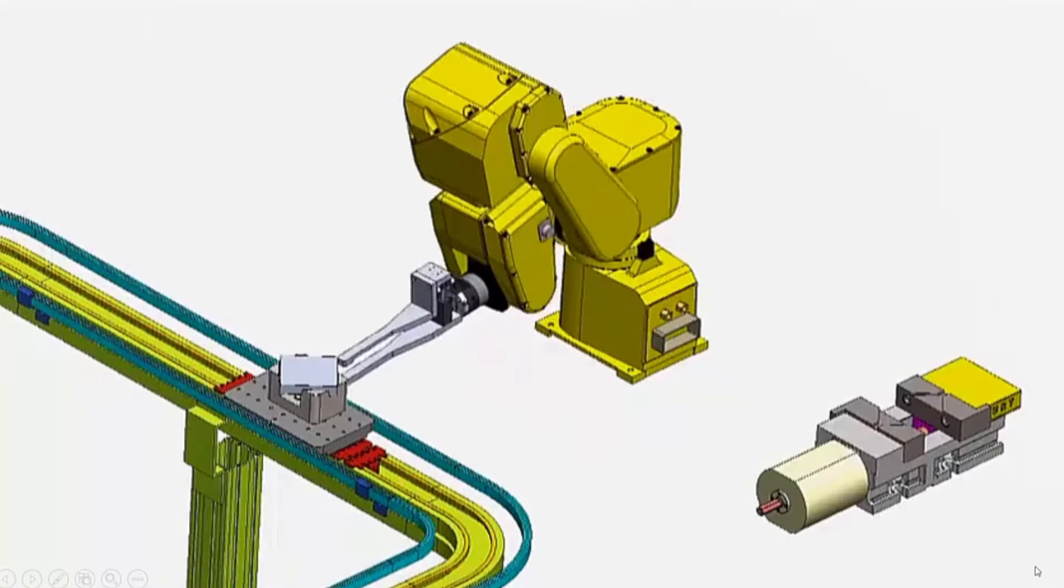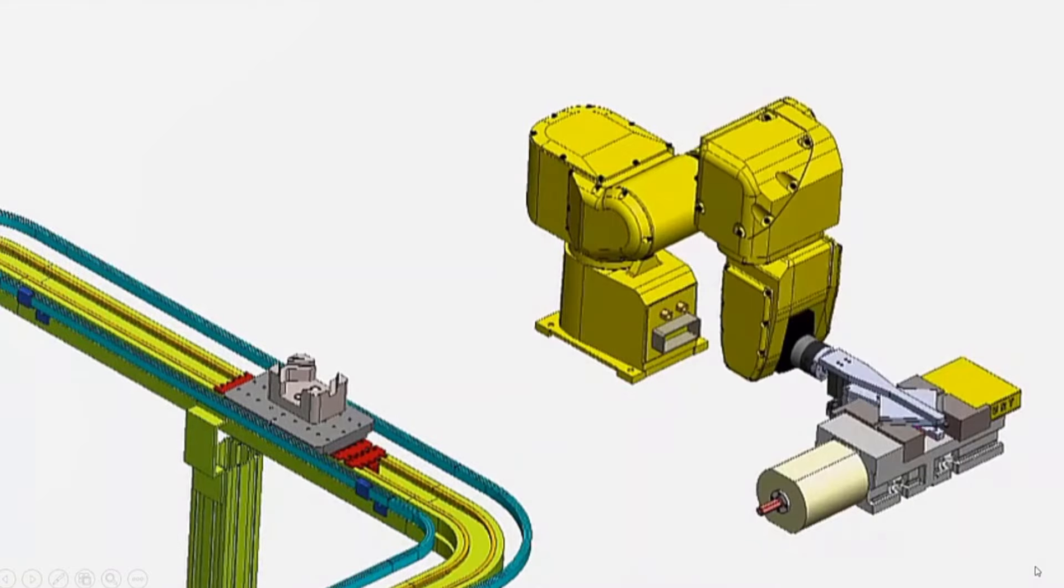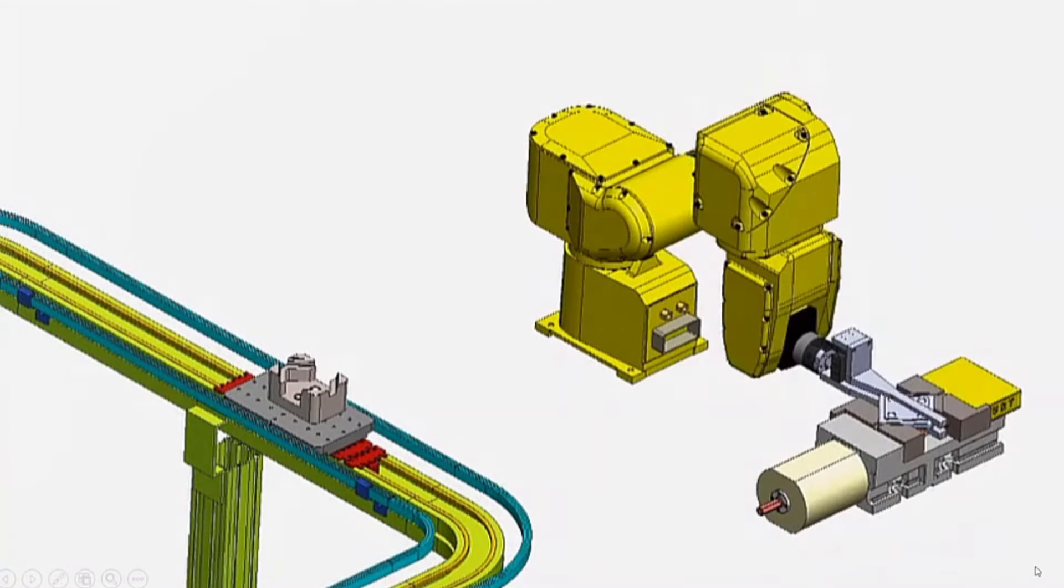In this project, students design end-of-arm tooling for a robot which picks raw stock off the pallet fixture, places it in a vise, machines top and bottom, and then returns it back to the pallet fixture.